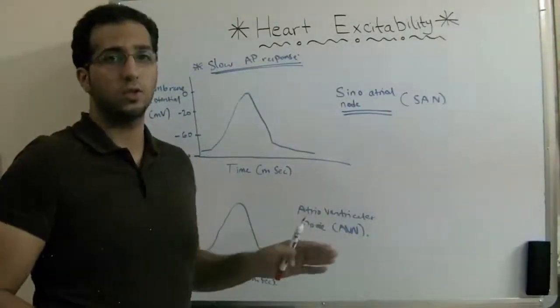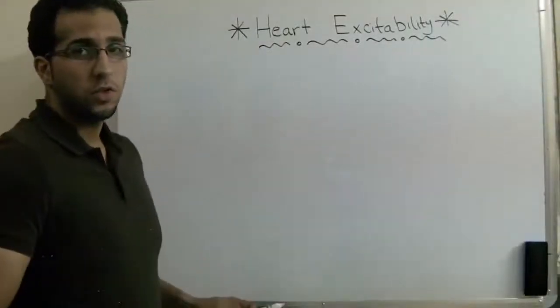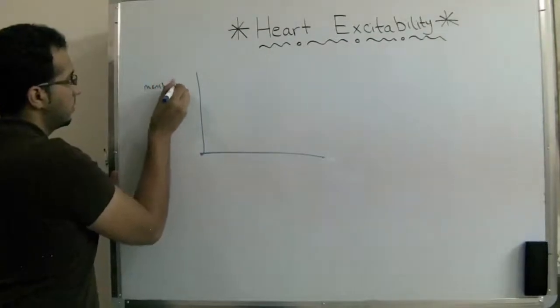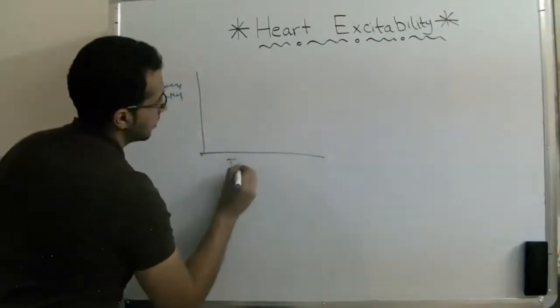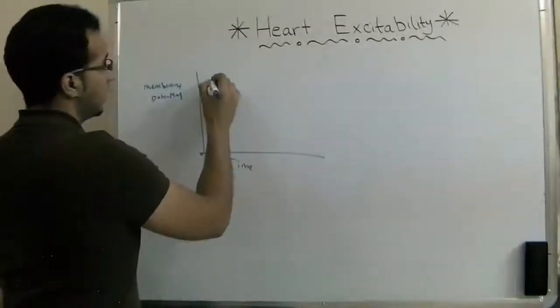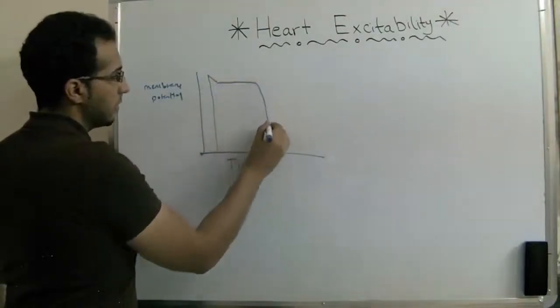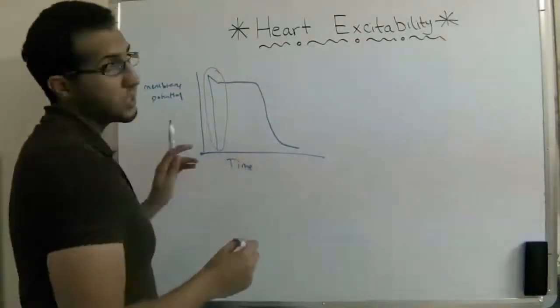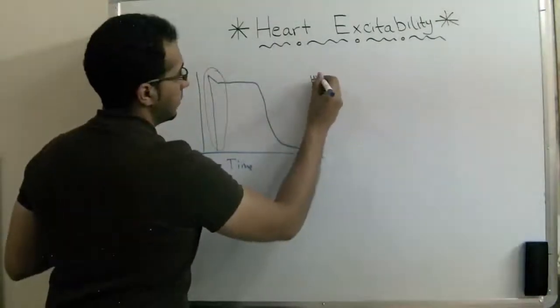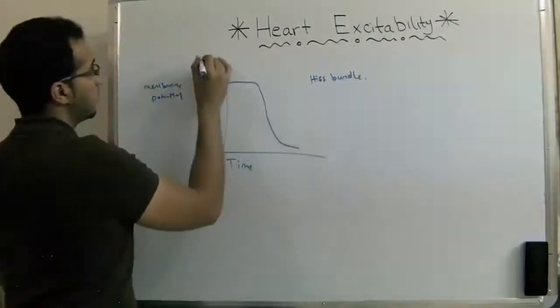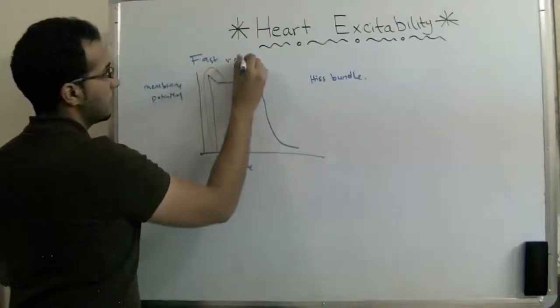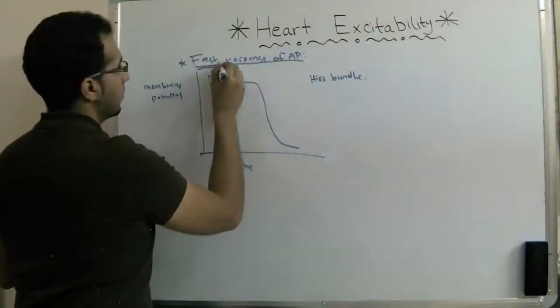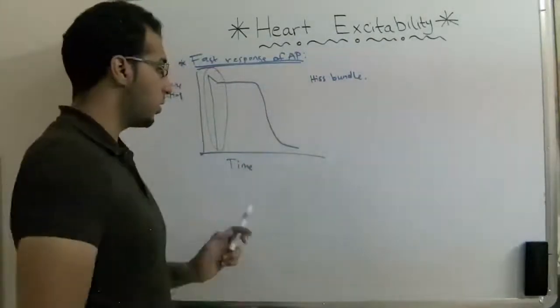Now we're going to show you the fast response. For the fast response action potential, we're going to draw the graph. The fast response has a straight line over here. This shows that it's a fast response. This is an example of the His bundle.